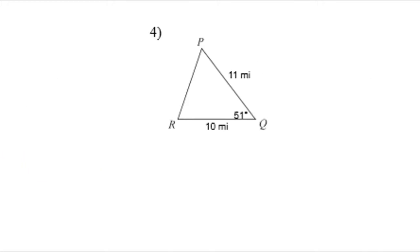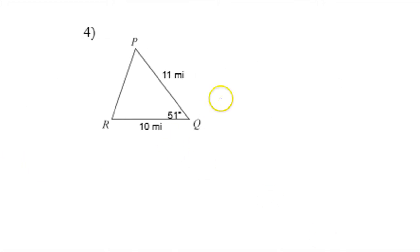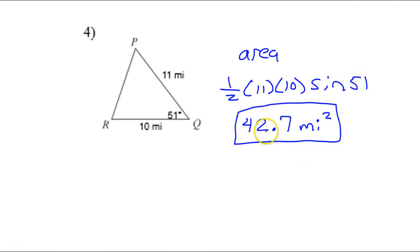What about number four? The area here should be one-half 11 times 10 times the sine of 51. And there I'm getting 42.7 square miles.